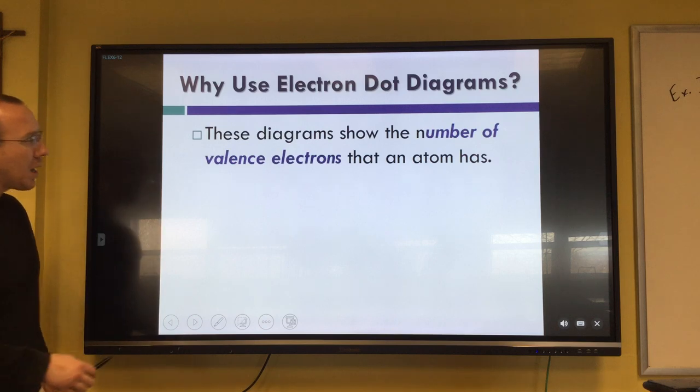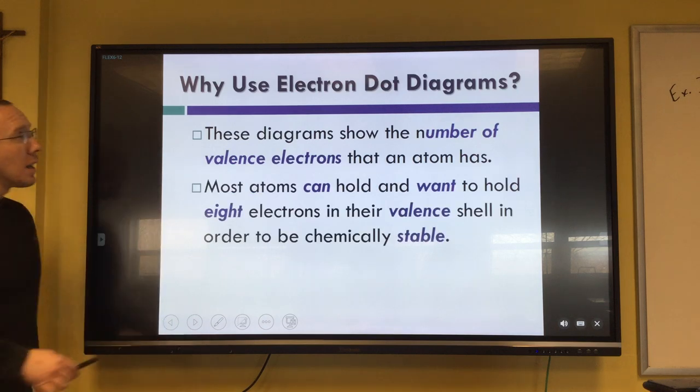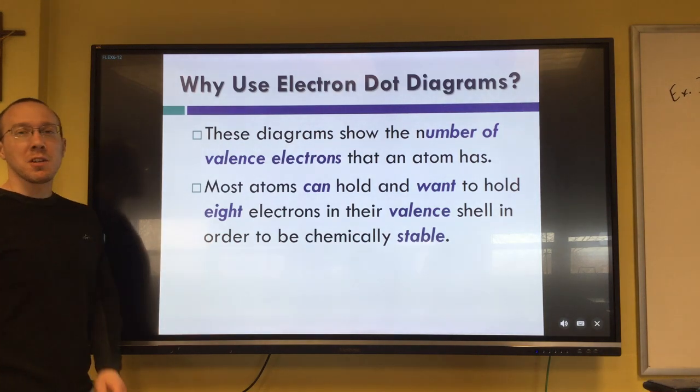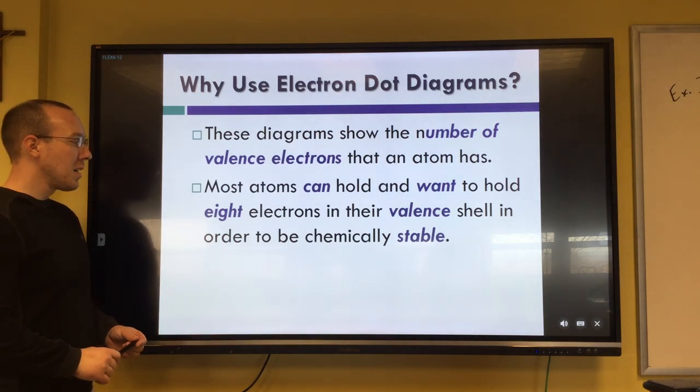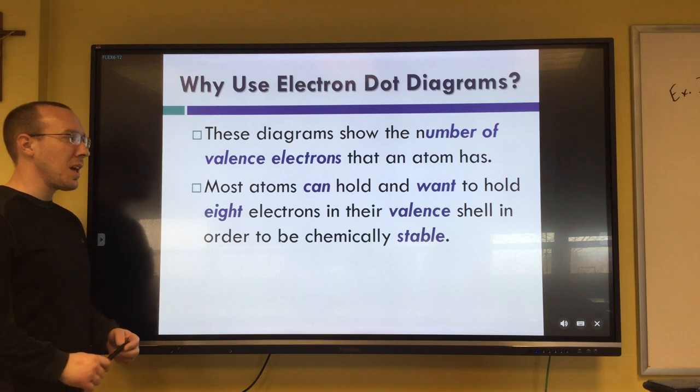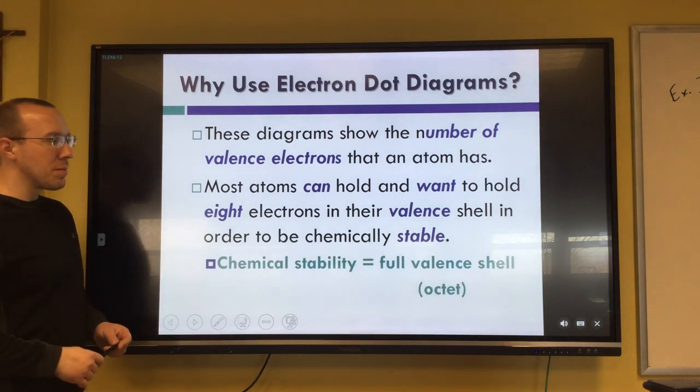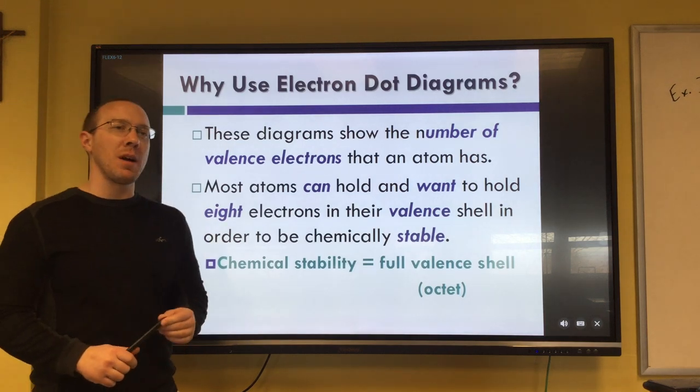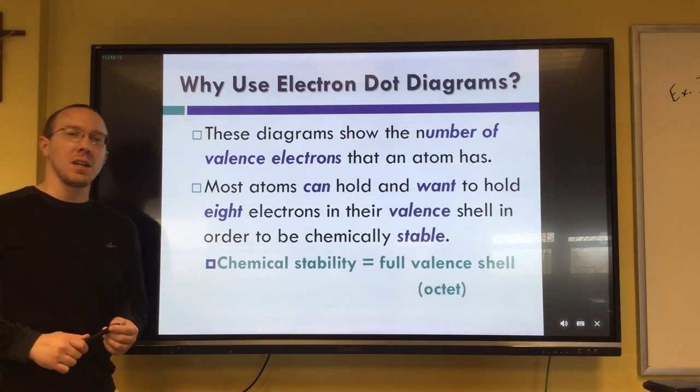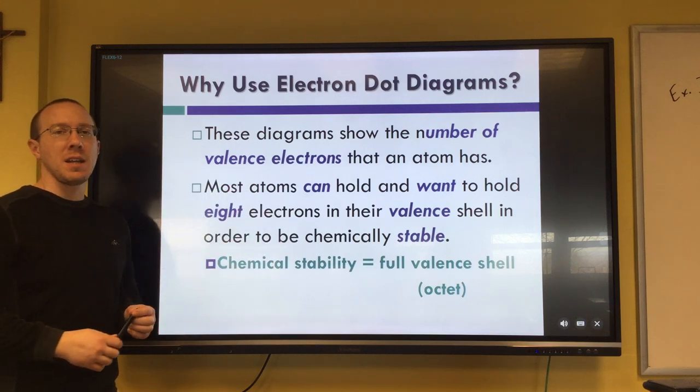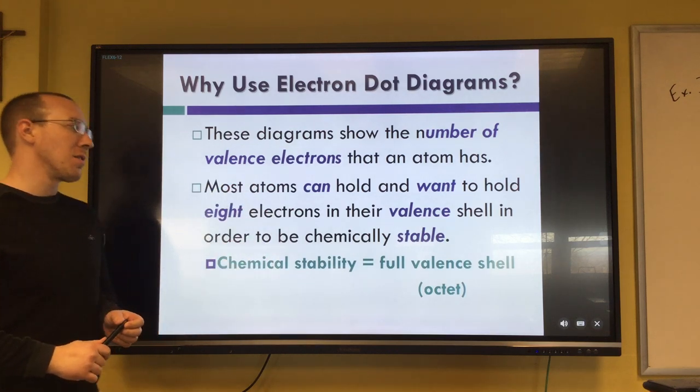First off, electron dot diagrams are used for valence electrons. It tells you how many electrons are used for bonding. The maximum number is eight, and eight is used to become stable. So when we think about our stable atoms, our elements on the periodic table, they're all the ones in the very last column. Those all have eight valence electrons in their outer energy level.